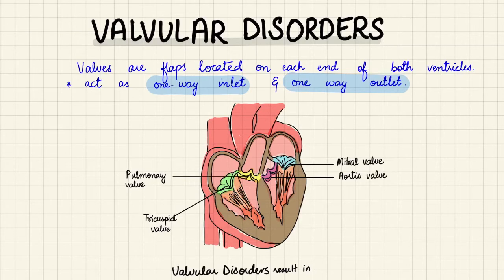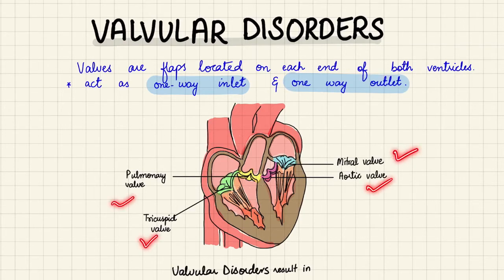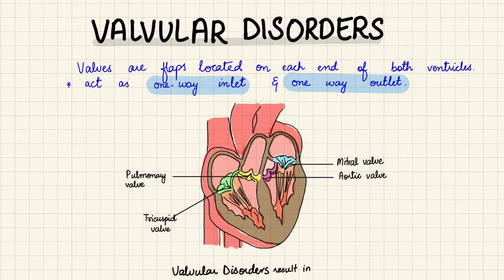Cardiac valvular disorders. Valves are flaps located on each end of both ventricles, acting as one-way inlets and outlets when healthy. We have four cardiac valves: the mitral valve between the left atrium and left ventricle, the tricuspid between the right atrium and right ventricle, the aortic valve separating the aorta from the left ventricle, and the pulmonary valve separating the right ventricle from the pulmonary trunk.